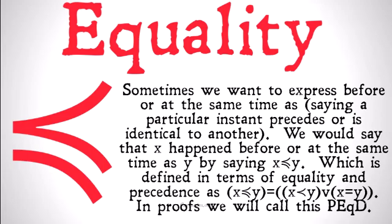And in proofs, we're going to call this PEQD. The important thing to note and understand here is that if two instants are identical to one another, that means that they happen at the same time. And if two instants happen at the same time, that means that they are identical to one another.